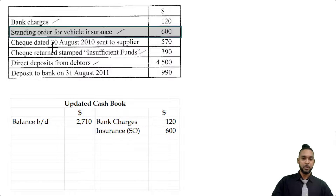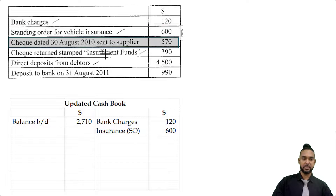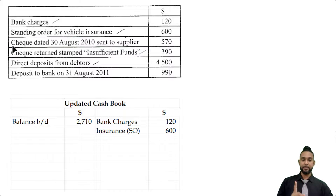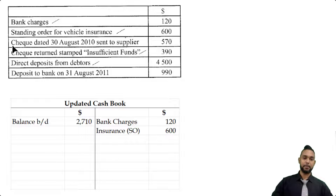The next item says check dated 30th August 2010 sent to supplier — that's a payment that would have been recorded in the cash book already. So we don't need to update the cash book for that item.